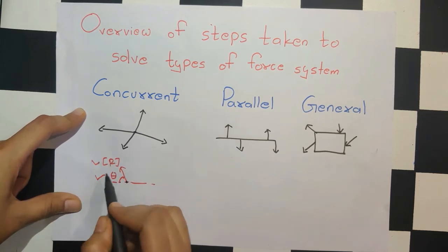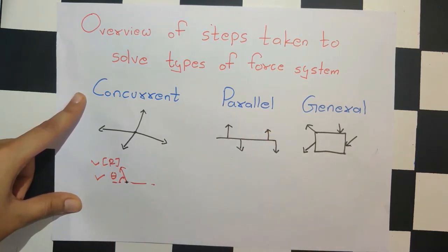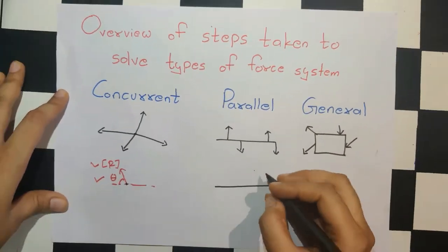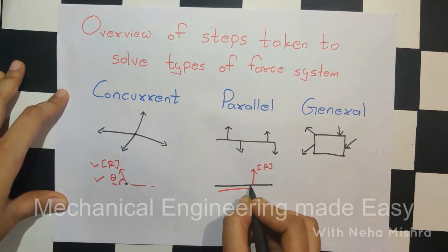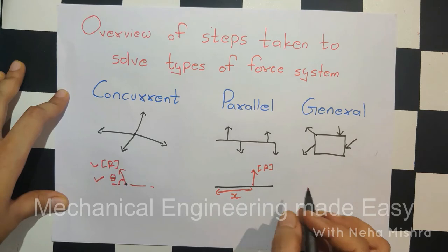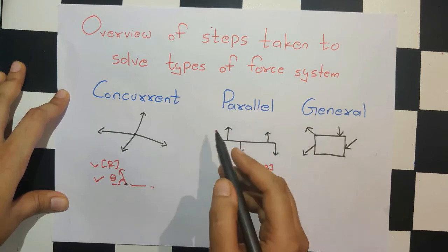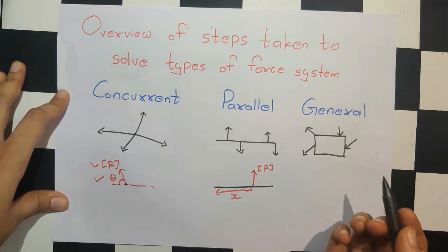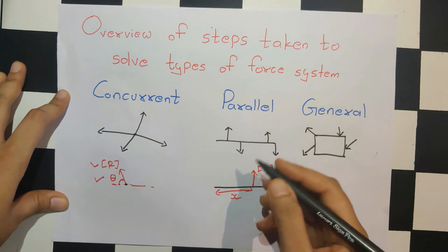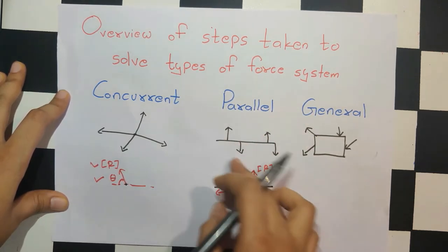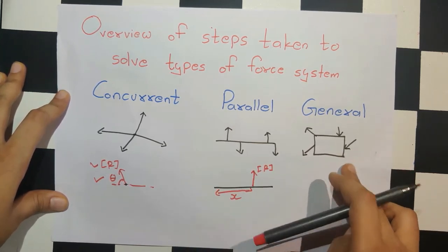For the parallel type of force system, along with the resultant magnitude R, we also need to find at what distance x it will act. We do not need to find θ because all the forces are parallel, so the resultant force will also be in the same direction — vertical, either upward or downward depending on the summation. So for parallel: R and x.